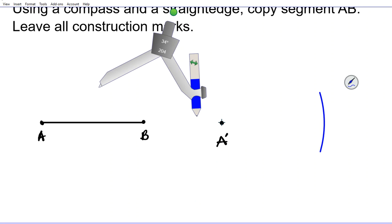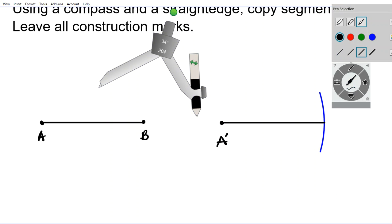Now what do we name the point that is the intersection of the line segment we just drew and the arc? This point right here is point B prime.